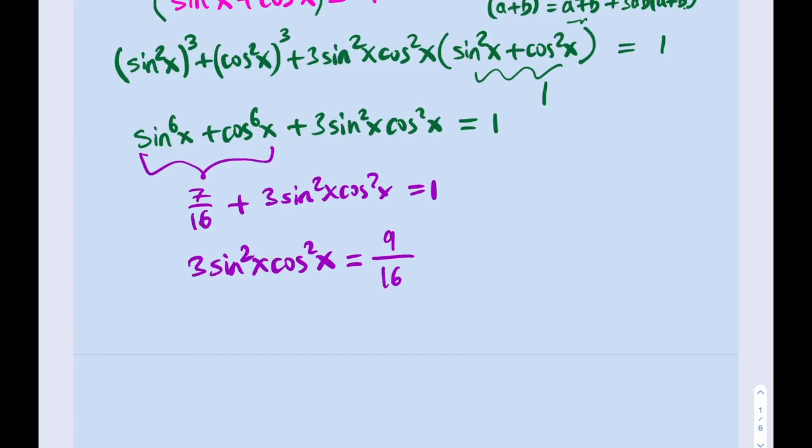What am I going to do with this? You might be thinking we can do the following. That's a path you can take. You can replace one of these with the identity. For example, first of all, I think you would do this: sin²xcos²x = 3/16, so you divide both sides by 3.